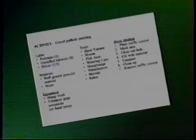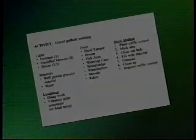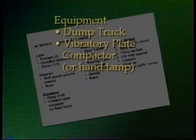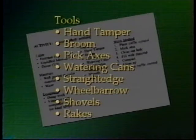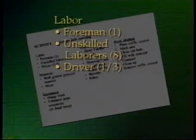A typical work statement for gravel pothole patching is shown here. In the example, to produce 8 cubic meters of gravel patching, it is necessary to use one hand compactor, one-third of an 8-ton dump truck, and a complete set of hand tools. The required labor for this activity includes one foreman, eight unskilled laborers, and one-third of a driver.